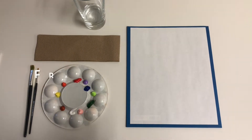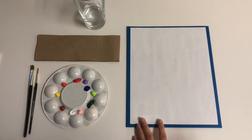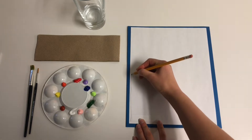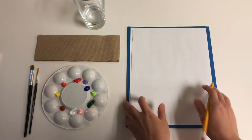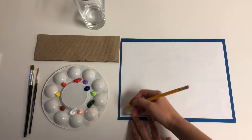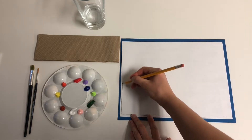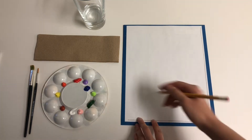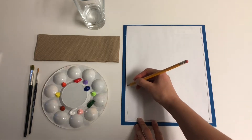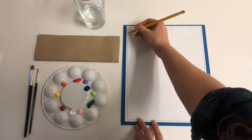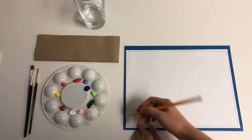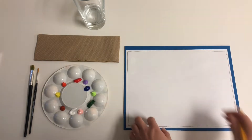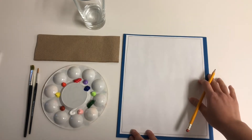The first thing that we're going to do is create our frame and name. With your writing utensil, hold your paper nice and tight and make a frame along the edge of your paper. Rotate your paper as needed, holding it with the opposite hand. At the bottom of your paper, write your first and last name.